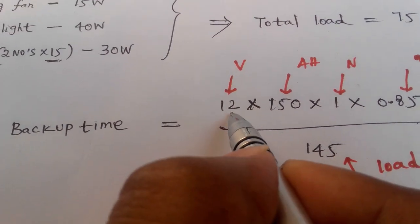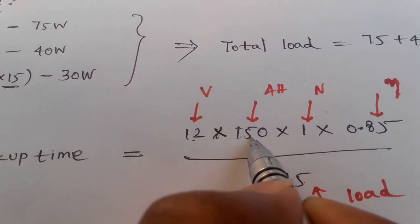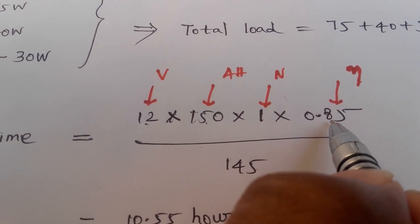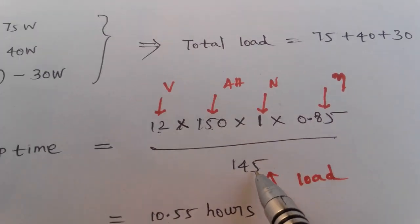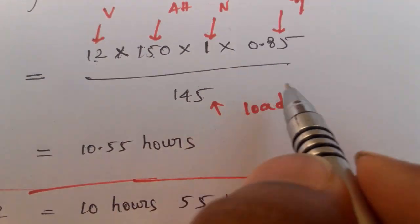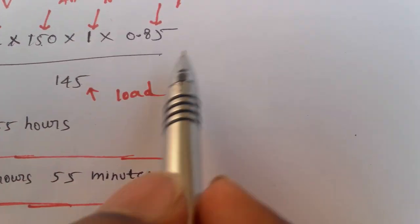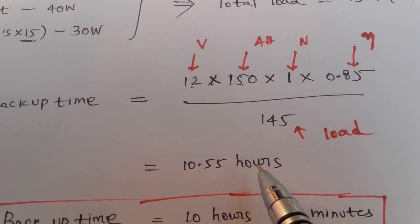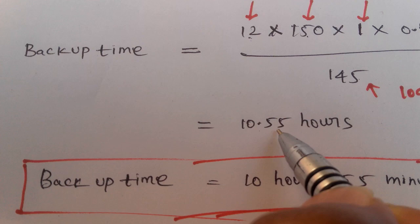Backup time equals battery voltage 12V times ampere hour 150Ah times N which is 1, times efficiency 0.85, divided by the load 145W. If you simplify this, it equals 10.55 hours, that is 10 hours and 55 minutes.